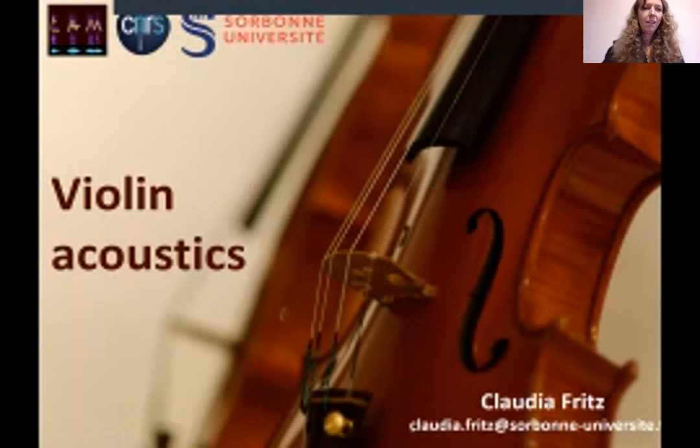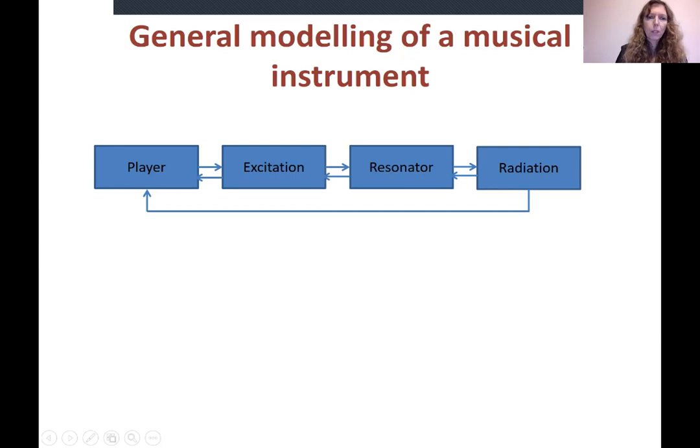So that would just be basic violin acoustics. If we look at the general modeling of a musical instrument, we have the player, then the excitation of the instrument, the resonator, and then the radiation. Of course it's always going both ways, and the radiation is going towards the ear of the player who can adjust his excitation.